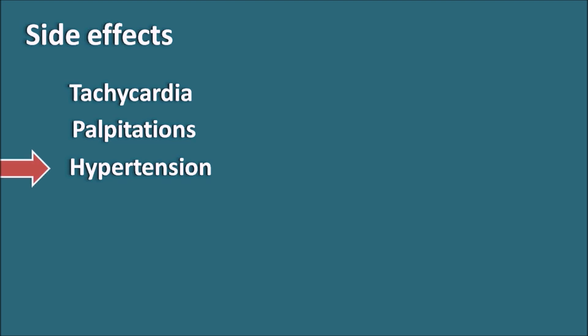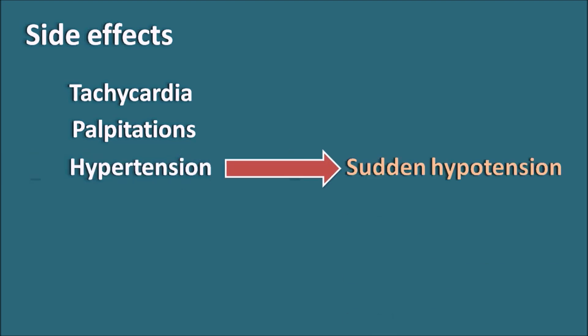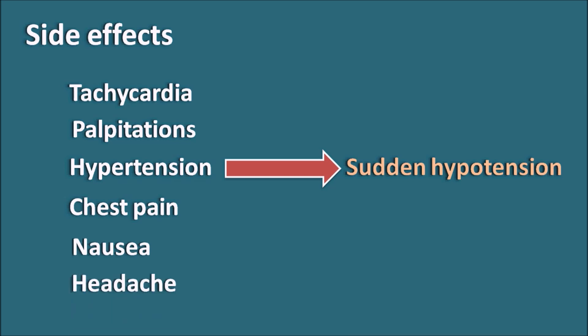However, Dobutamine can also produce a sudden precipitation of hypotension. There is a sensitive balance between the alpha-1 and beta-2 receptors as well as reflex mechanisms, so while a patient may normally observe hypertension, hypotension may suddenly also be precipitated. As it increases cardiac work, it can also precipitate chest pain, as well as other side effects like nausea and headache.